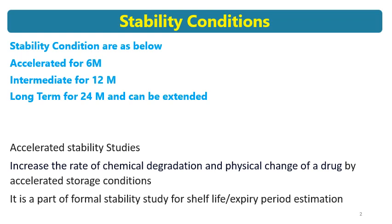Accelerated stability studies involve a storage temperature of 40 degrees Celsius and 75% RH. These conditions increase the rate of chemical degradation and physical change of the drug. Accelerated condition is also a part of the formal stability study for shelf life estimation and expiry period estimation.